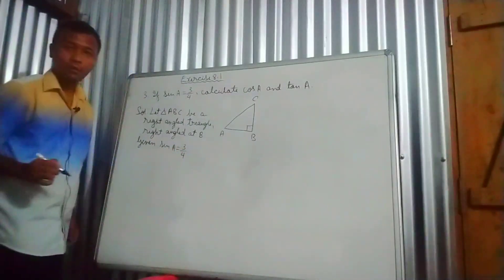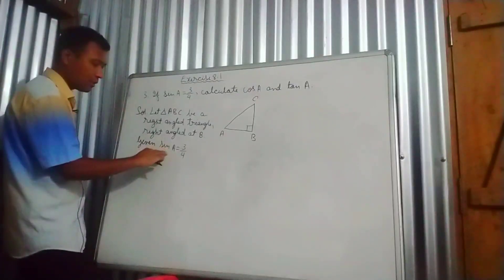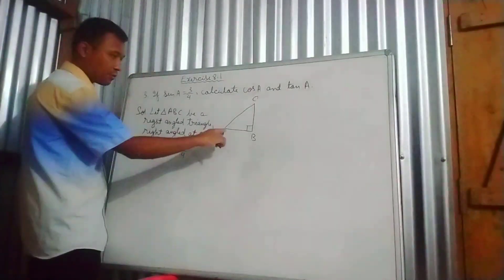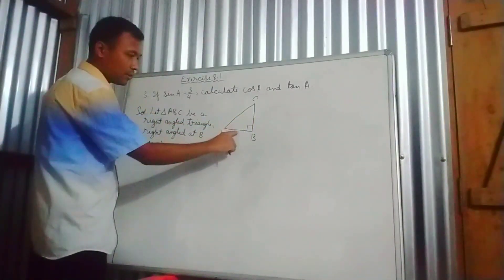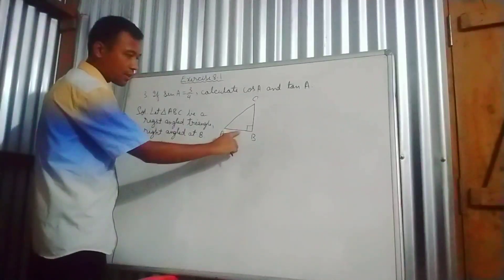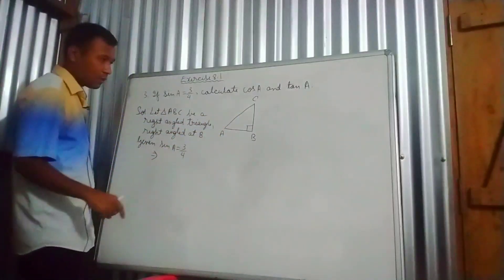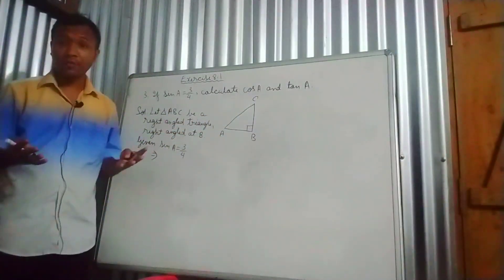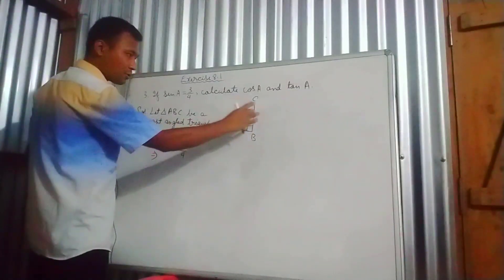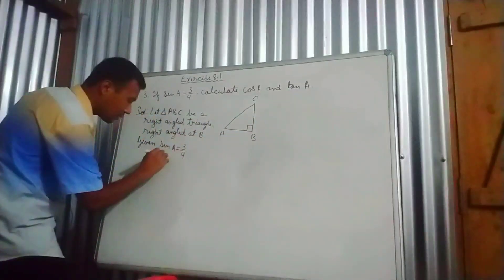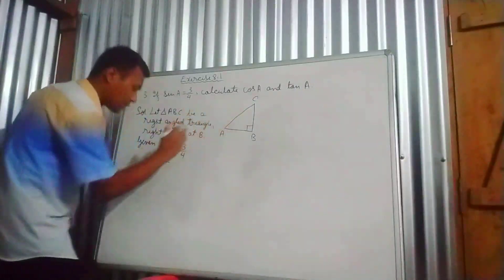The triangle has right angle at B. Sin A equals 3 by 4. For angle A, the opposite side is perpendicular, which is BC, and the hypotenuse is AC. Sin theta is defined as perpendicular by hypotenuse. So perpendicular is BC and hypotenuse is AC.